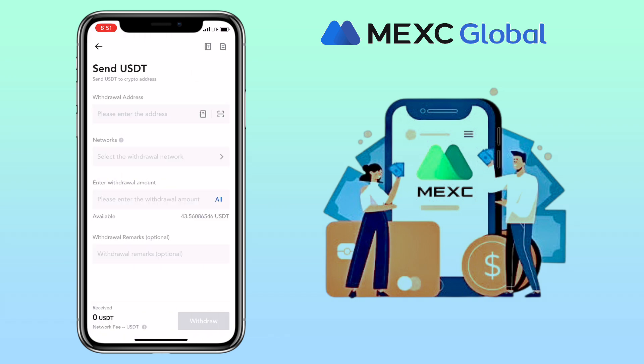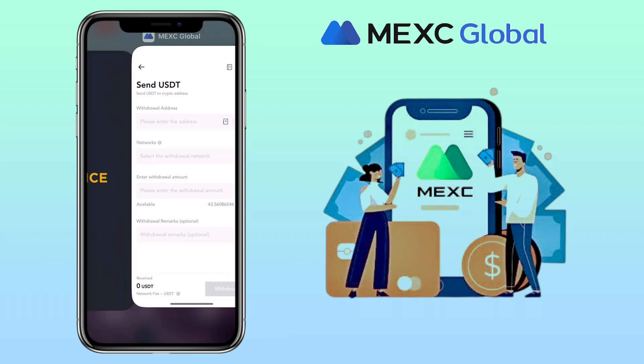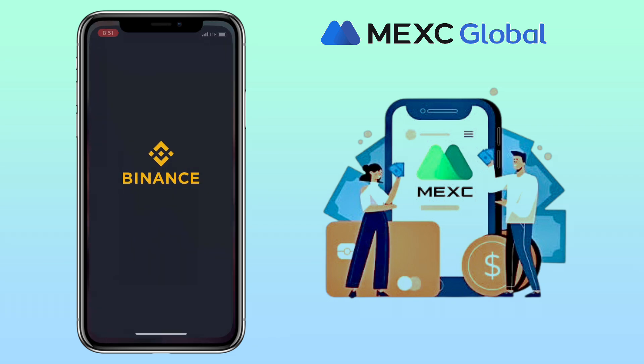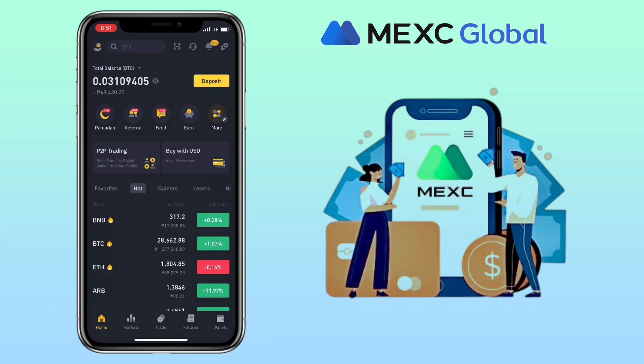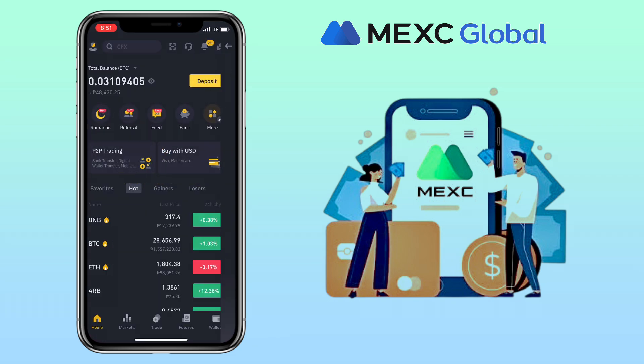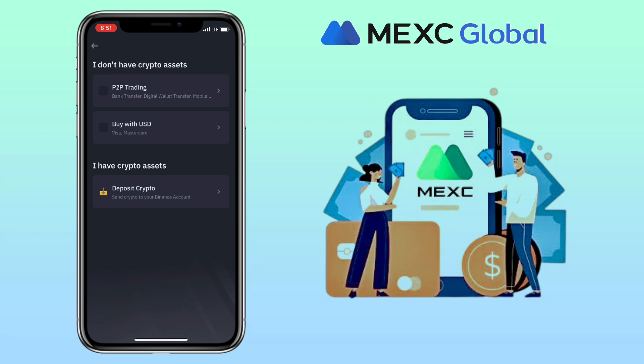You will need to get your Binance deposit address. Go to the Binance app. Under home, you tap deposit here. Select deposit crypto.